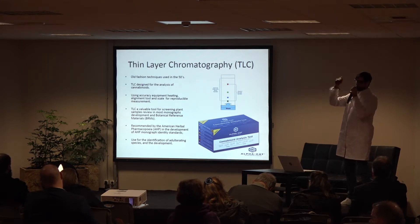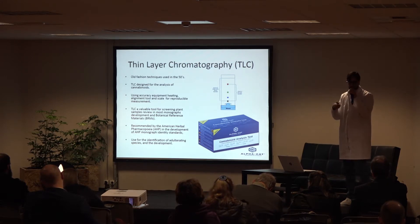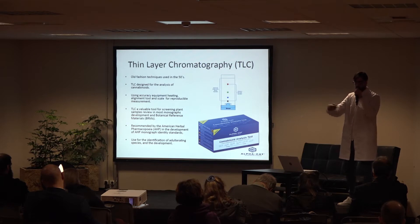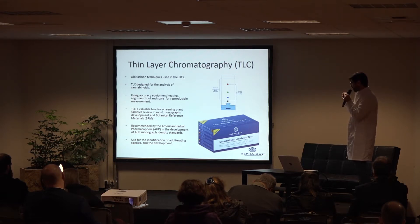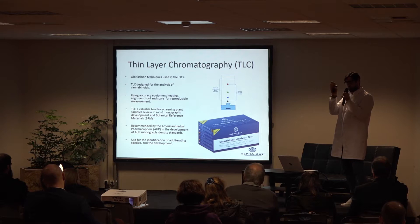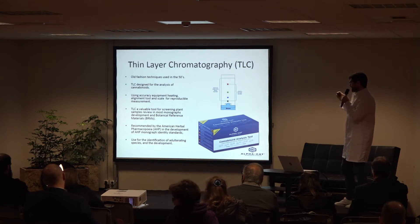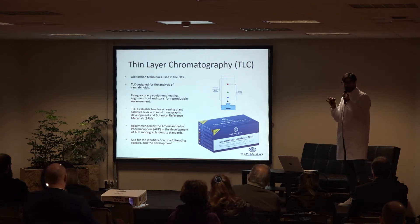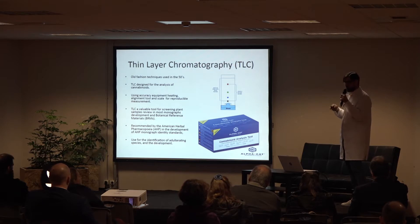The TLC method has been used in all monographs of botanical plants. A monograph tells herbalists which part of the plant is interesting for healing purposes, what compounds it produces, how to extract it, how to analyze it, and how to cultivate it. This method has always been the first analytical reference method. It's also been reported and referenced in the American Herbal Pharmacopoeia of Cannabis, which publishes a monograph explaining how to use the cannabis plant for phytotherapy purposes.